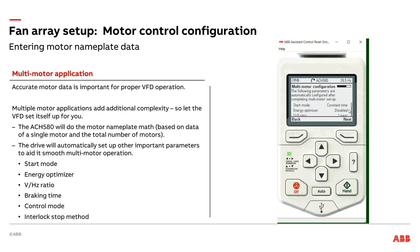Energy optimizer has been disabled. One of the neat things with the drive is it can vary the voltage based on frequency — normally that's how it controls speed — but it can also adjust that voltage at a specific frequency to find the sweet spot for energy efficiency. That works well with a single motor application. With a multi-motor application it just doesn't work as well because you increase the chance of getting a bad spot where you might stall out. So by default we disable the energy optimizer functionality to avoid problems in a multiple motor configuration.